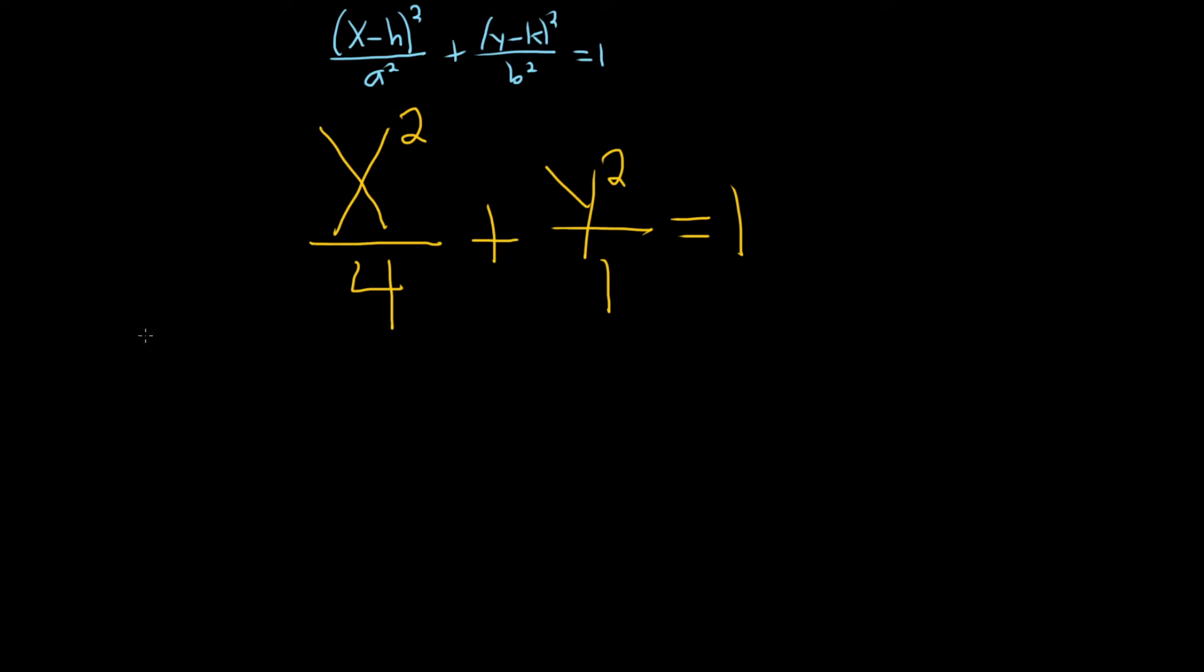So in this case, you can see that the center of this ellipse is 0,0, because the h and k are not here. It's x minus 0 squared, and also y minus 0 squared.